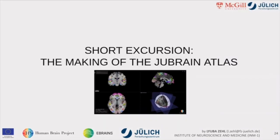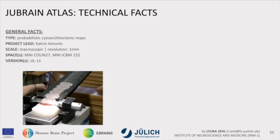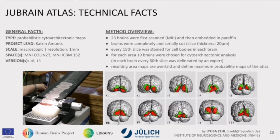A short excursion on the JuBrain: because we're talking about a probabilistic map, we have 23 brains. They are first scanned with MRI, then embedded in paraffin and completely and serially cut in 20 micrometer slices. Instead of staining all of them, only every 15th slice is stained, and for analysis only about every 60th slice is used for expert delineation. These are done fully manually — experts sit down, take each brain, and delineate one specific area per brain.